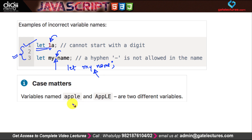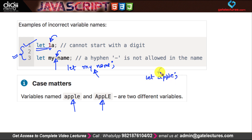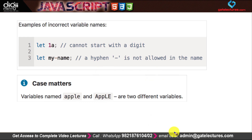In JavaScript, the case of variable names matters. For example, if I declare 'let apple' with a lowercase 'a' and then 'let Apple' with a capital 'A', these are two different variables because JavaScript variable names are case sensitive.